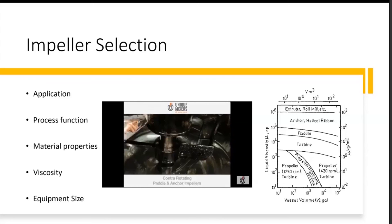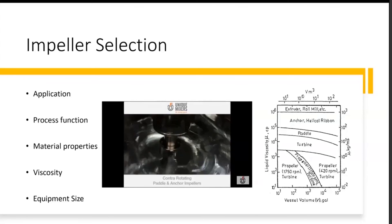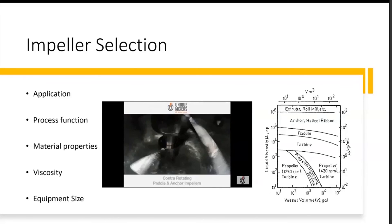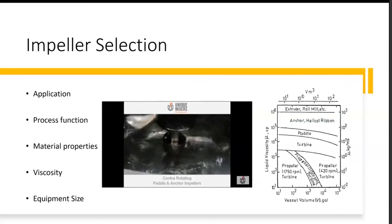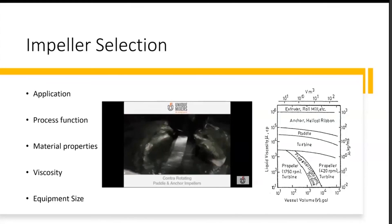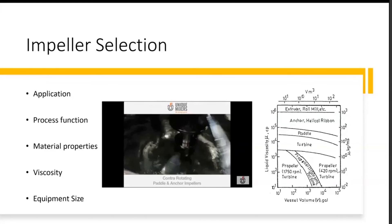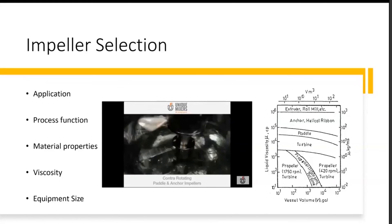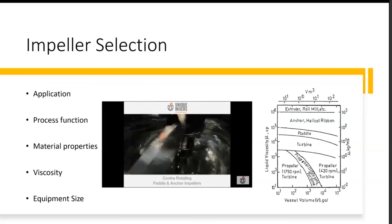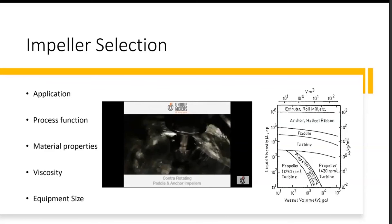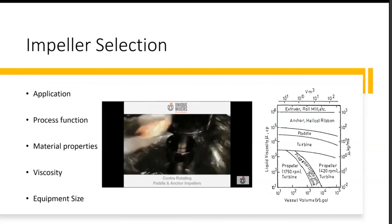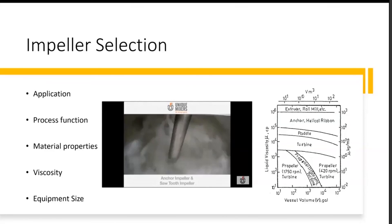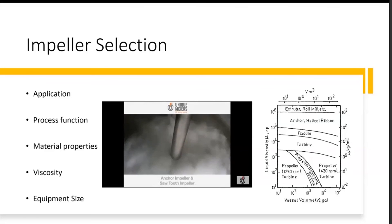We also have the contra-rotating paddle and anchor impellers. On a single shaft, you have two impellers — one is a close clearance impeller and another is a turbine — both rotating in opposite directions and at differential speeds. We also have the high speed dispersion, the anchor impeller, and the saw tooth impeller.